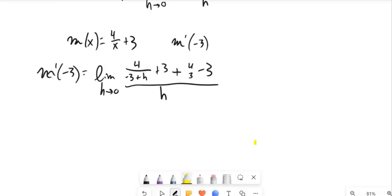And I've got, this is kind of nice, plus 3, minus 3, so that goes. So I'm still operating inside of that limit. I've got 4 over negative 3 plus H, plus 4 thirds.